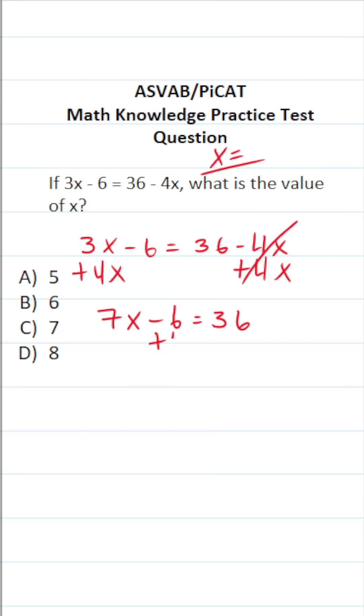Let's go ahead and add 6 to both sides of this equation. In doing so, this crosses out. This says 7x equals 36 plus 6, which is going to be 42.